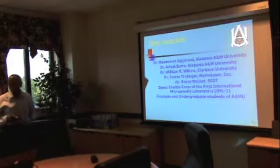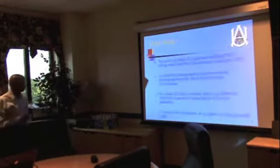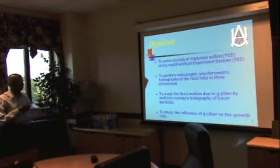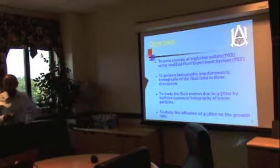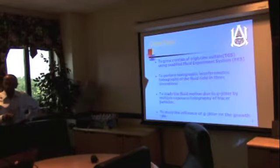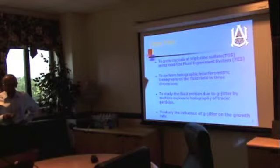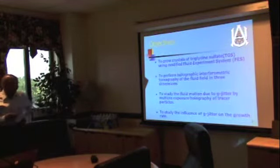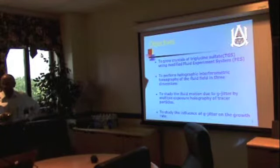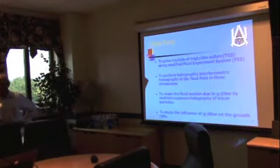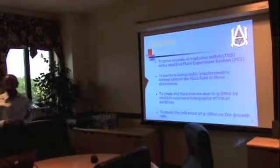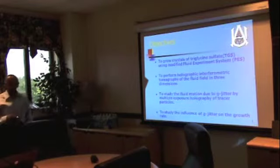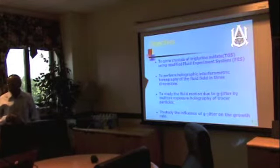And then lots of graduate students and graduate students. The objectives of our experiment was to grow and choose a material called triglycine sulphate. And the reason we chose this material is because this material has been studied for many, many years. And there are hundreds of papers in the literature for this material. So we don't want to pick up a material which is not known to people, but a brand new material. Then we will have to pick up starting ground-based data work. So we picked a material which is well-known.